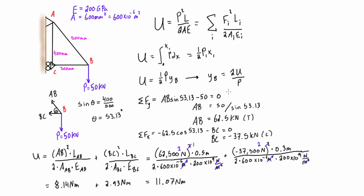Now what we want to do is we want to bring that into this expression here so we have yB is equal to two times the elastic strain energy over the applied load. So we get this is 2 times 11.07 newton meters and that is all over the applied load of 50 kilonewtons so that is 50,000 newtons and that's going to give us our yB which is our displacement as 0.44 millimeters.